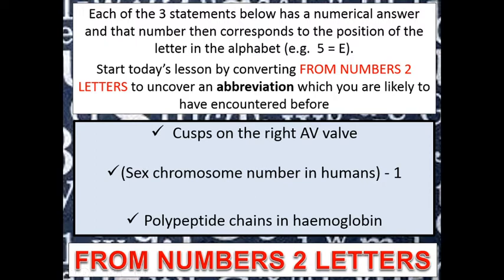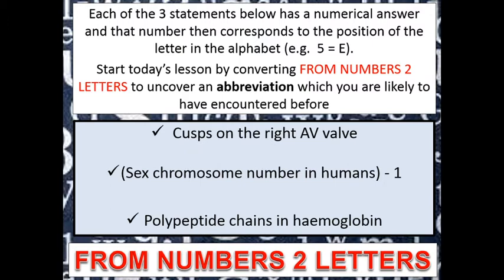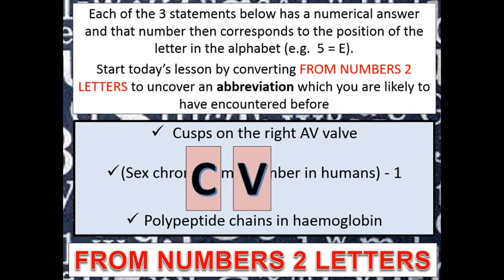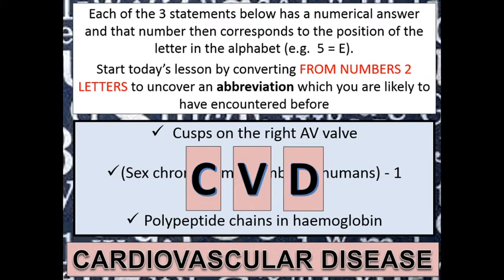There's a little game: each of the three clues below has a numerical answer, and that number corresponds to the position of the letter in the alphabet. Convert numbers to letters to uncover an abbreviation. Cusps in the right AV valve — the tricuspid has three, so the third letter is C. Sex chromosome number in humans minus one — chromosome 23 minus 1 is 22, so the 22nd letter is V. Polypeptide chains in haemoglobin — there are four, so the fourth letter is D. C, V, D — cardiovascular disease.